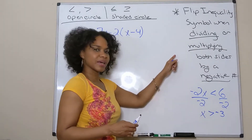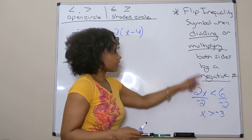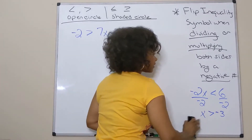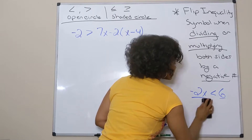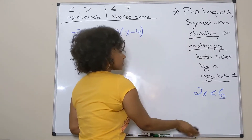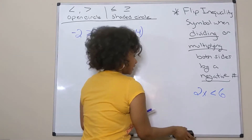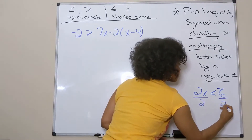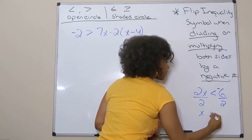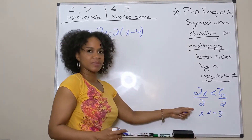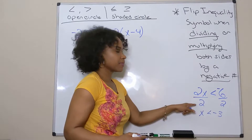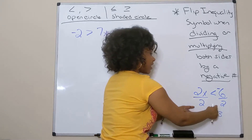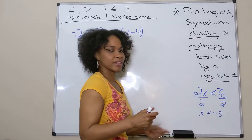You just have to remember to flip that inequality symbol when you're dividing or multiplying both sides by a negative number. For example, if I have 2x is less than negative 6, to solve this I'm dividing both sides by a positive 2. Since I'm dividing by a positive number, I do not flip the symbol. It doesn't matter if your numerator is negative — you have to look at what you're dividing or multiplying both sides by to flip that inequality symbol.